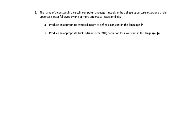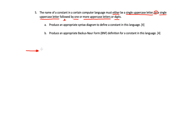Let's look at question five. This was the backers no question worth a total of eight marks. The name of a constant in a certain computer language must either be a single uppercase letter, or a single uppercase letter followed by one or more uppercase letters or digits. Produce an appropriate syntax diagram to define a constant in this language, worth a total of four marks.